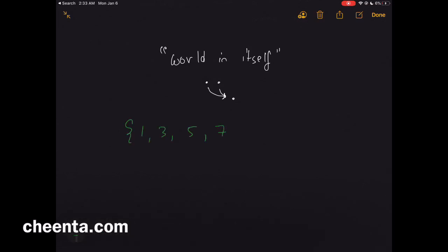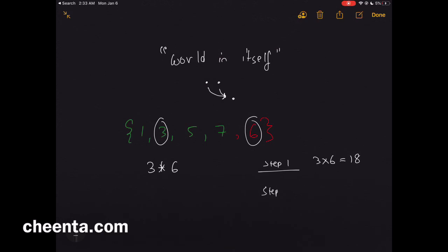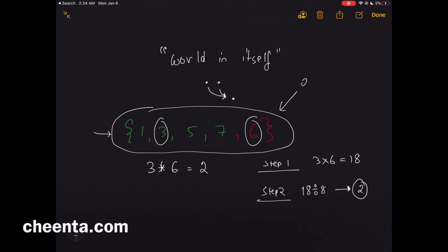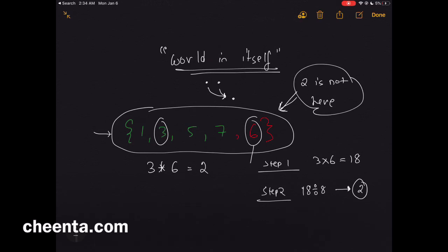I'll show you that this is not always the case. If instead of {1, 3, 5, 7} we also throw in a 6, combining two elements can leave the set. For example, 3 star 6: step one gives 18, step two divides by 8, the remainder is 2. So 3 star 6 is 2 — but 2 is not in this set. Throwing in that 6 distorted the set.